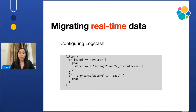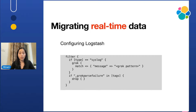We also want to drop all the events that are not really needed — that is, the events or logs that are being generated as audit logs or internal logs inside Splunk. We are omitting those using Grok parse failure in Logstash.